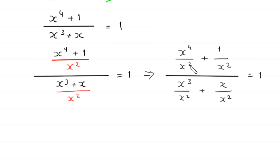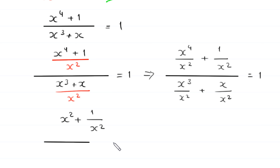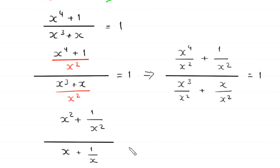This simplifies so that x to the power 4 over x squared becomes x squared, plus 1 over x squared, all divided by x cubed over x squared which becomes x, plus x over x squared which becomes 1 over x, is equal to 1.